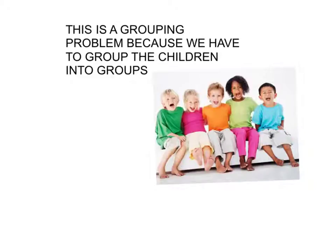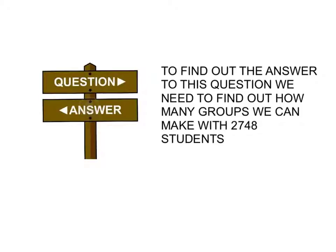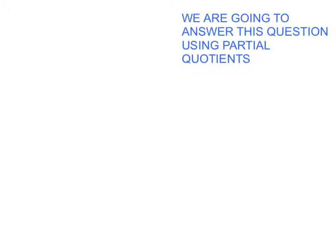This is a grouping problem because we have to group the children into groups. To find out the answer to this question, we need to find out how many groups we can make with 2,748 students. We're going to answer this question using partial quotients.